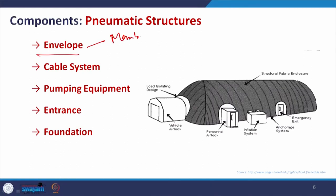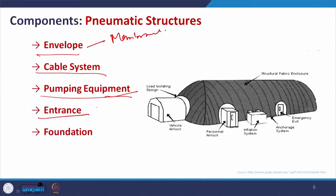Coming to the components: the typical components of a pneumatic structure are the envelope — the membrane we discussed; the cable system that anchors everything; the pumping equipment since air is the source of stability; the entrance, which must be air-locked so it does not release pressure; and constant monitoring of pumping and overall pressure difference. Foundation is also required — the endpoints may be attached via cable to a particular post or pier for stability.